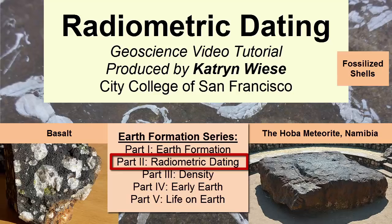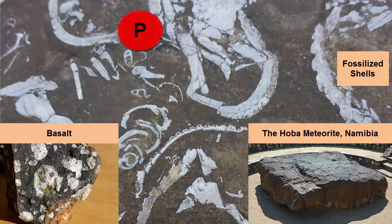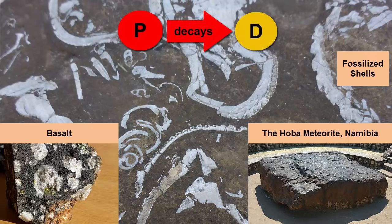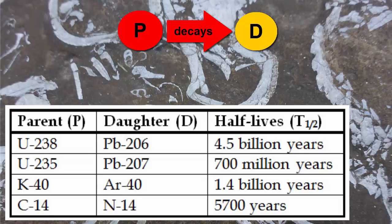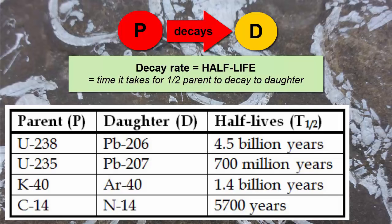First step: we need to identify a radioactive parent material that is present in our rock and that decays into daughter material at a rate that ensures enough of both parent and daughter in the rock to measure them. There are a number of parent-daughter radioactive decay pairs, and each pair has a different decay rate known as a half-life. Half-life is the amount of time it takes for one half of the original parent radioactive material to decay into daughter product.